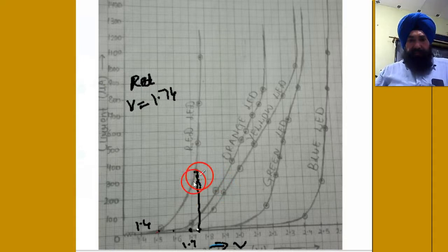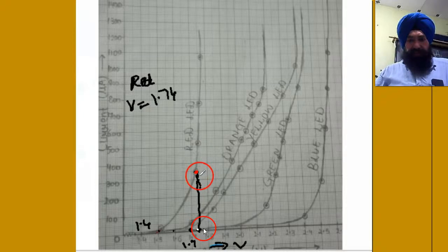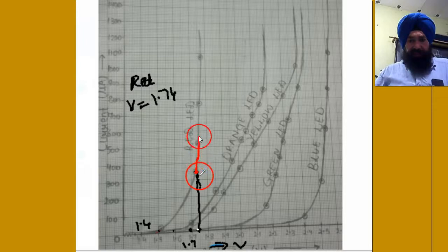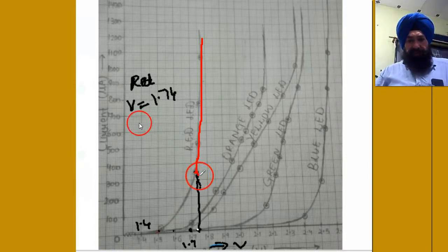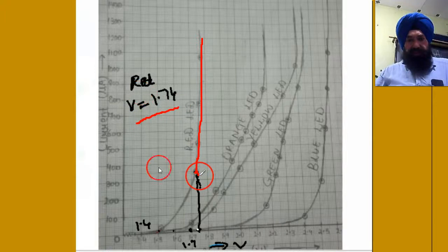Now this voltage is very important, which is 1.74. Just after 1.74, you just notice, this graph is almost a straight line, vertical straight line, very small variation in the voltage. So this voltage is very important for us, 1.74 for the red LED.